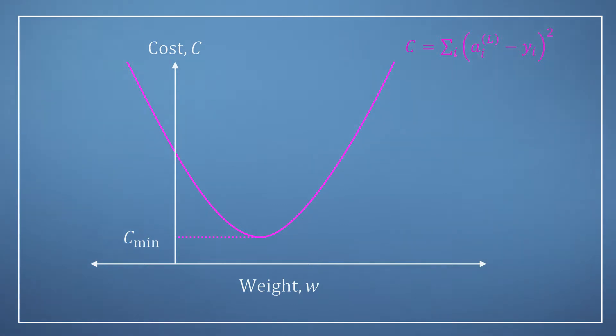Now based on our understanding of calculus, if we were somehow able to work out the gradient of C with respect to the variable w at some initial point w zero, then we can simply head in the opposite direction.